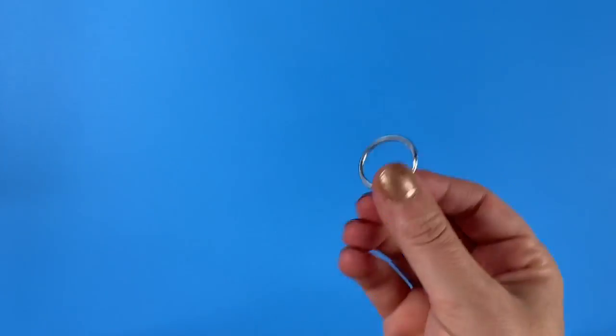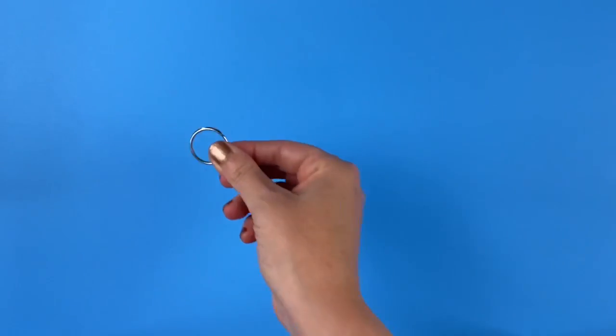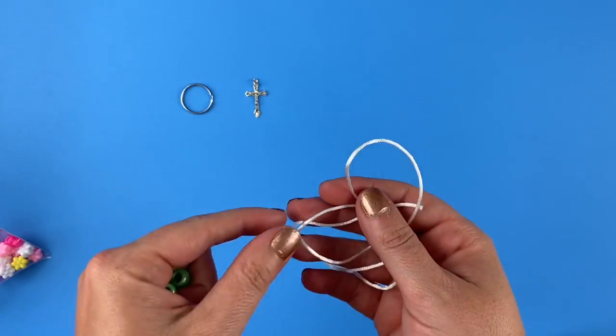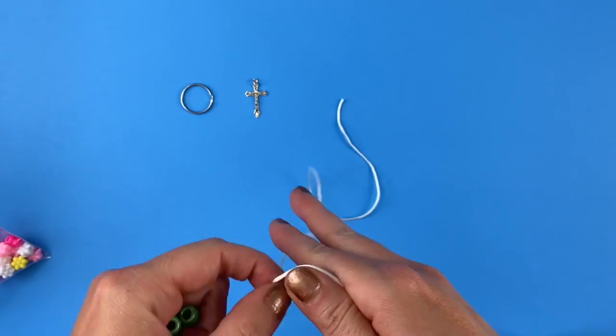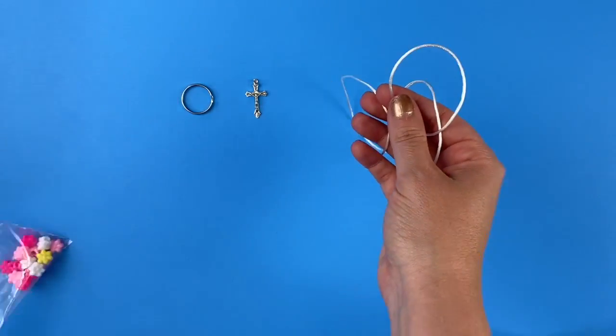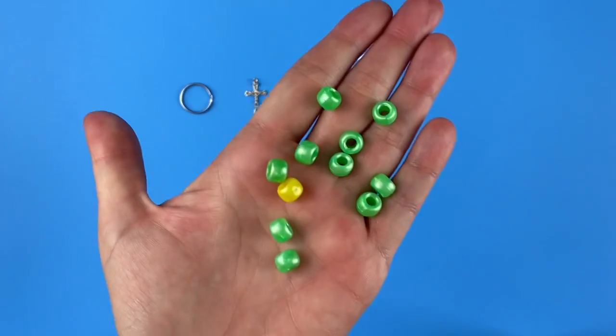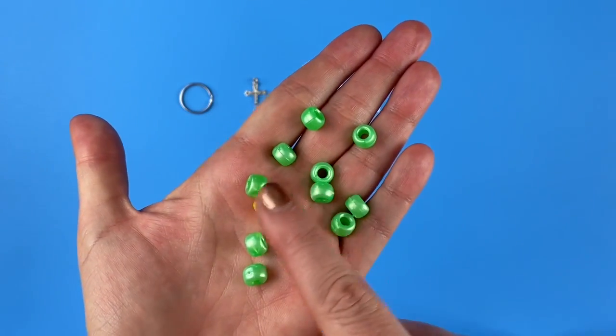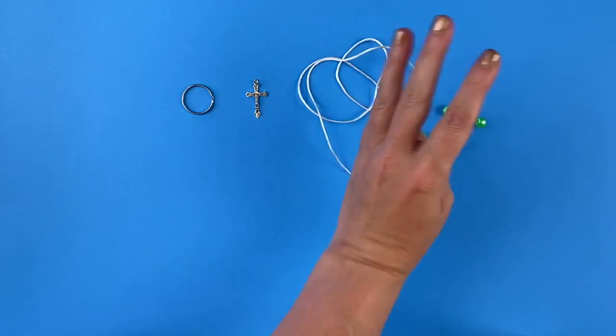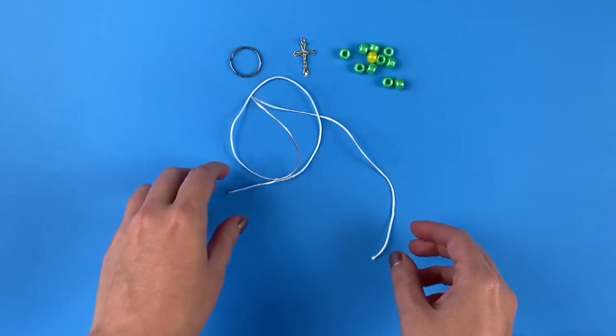What you need to make your own is either a key ring or a St. Therese medal, a crucifix or cross to go at the end. Then you're going to need a piece of string. Cut it about three feet long. Then you're going to need 11 pony beads. So here I have 10 of one color and one of a different color. That's all you need, so we are ready to get started.